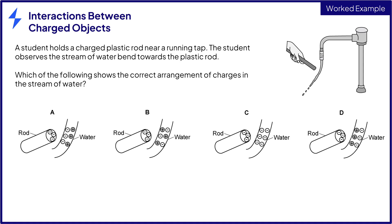In each of the diagrams the rod is negatively charged. Water molecules are polar. That means that they have areas of positive and negative charge. You don't need to know that, but that's how this phenomenon actually works.